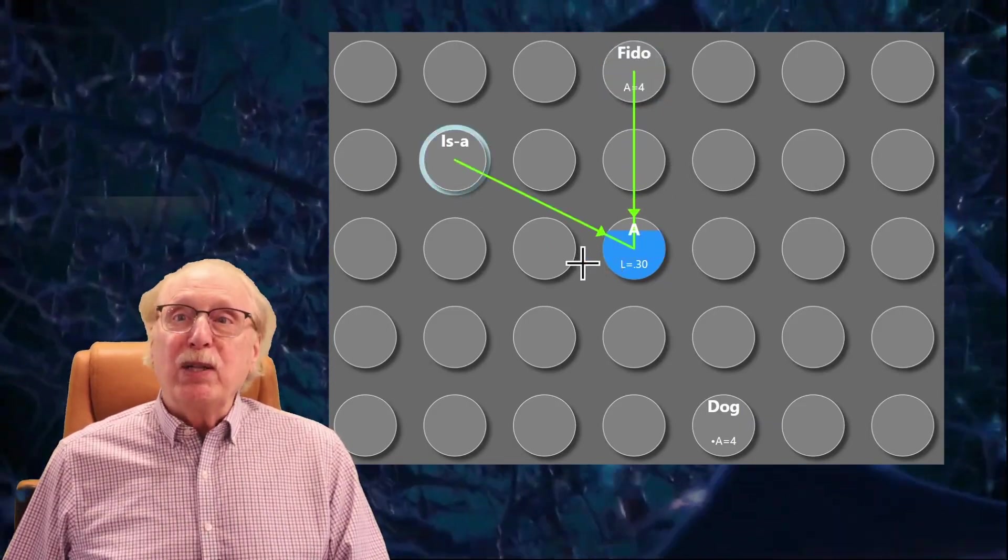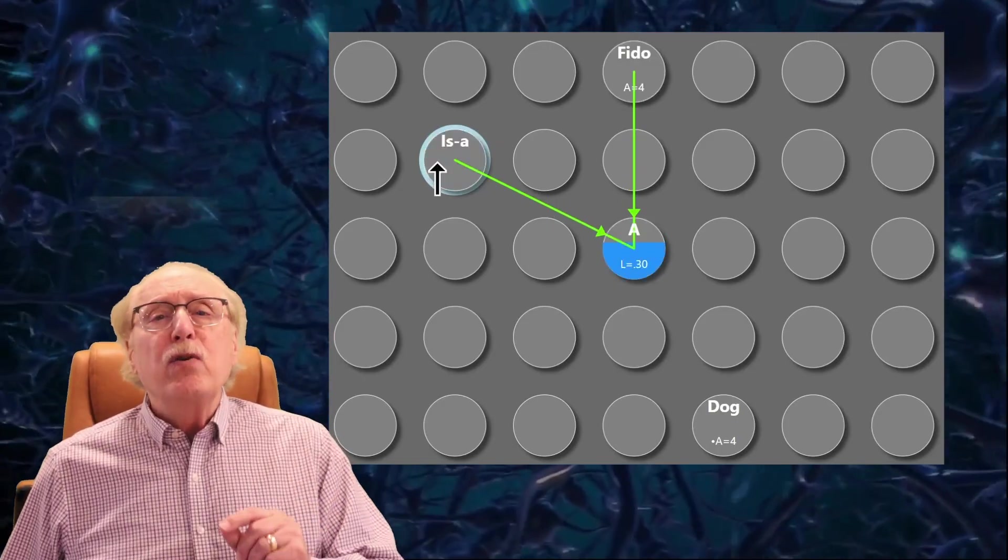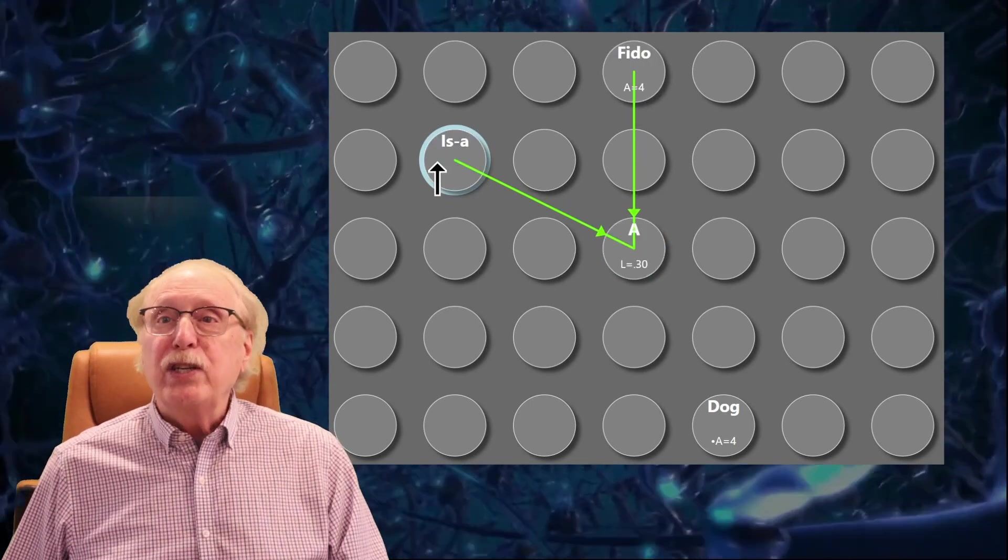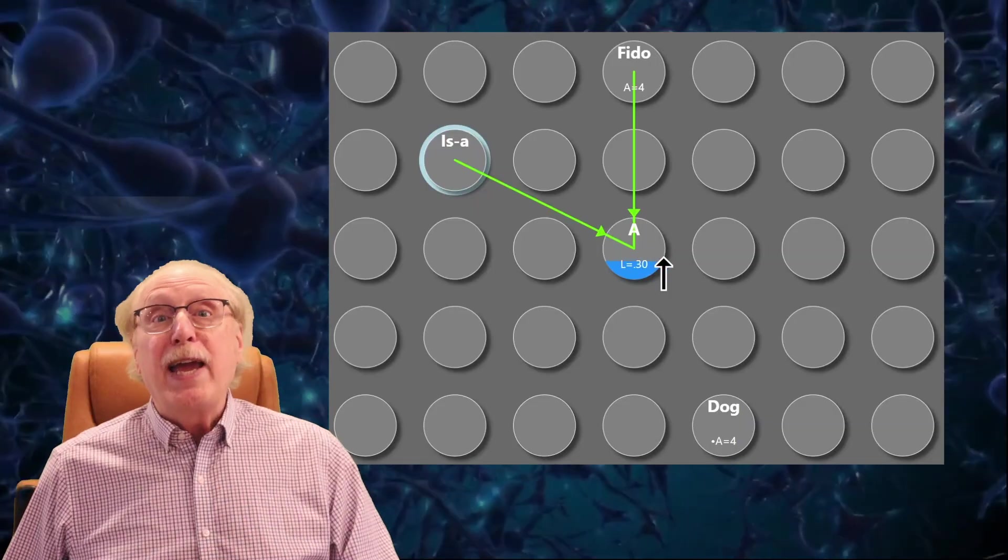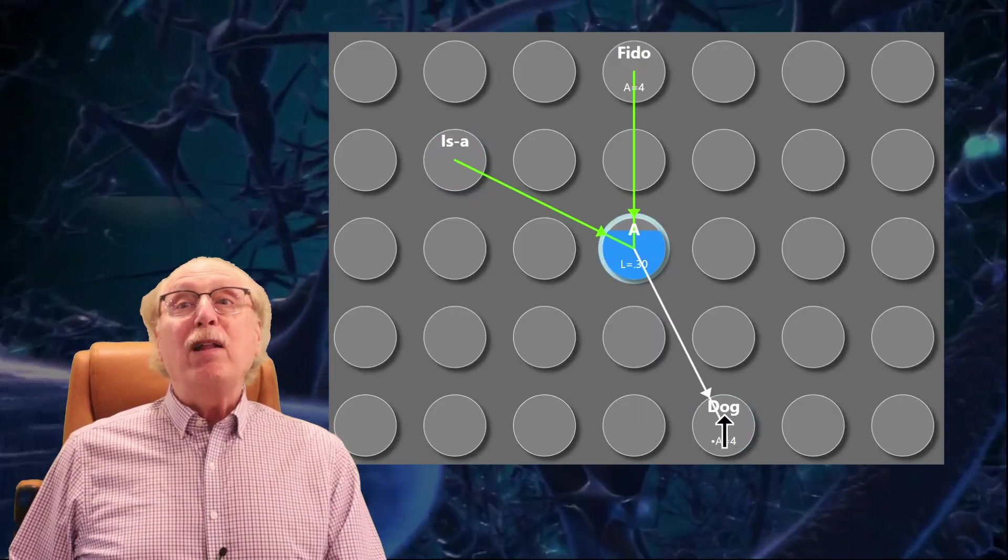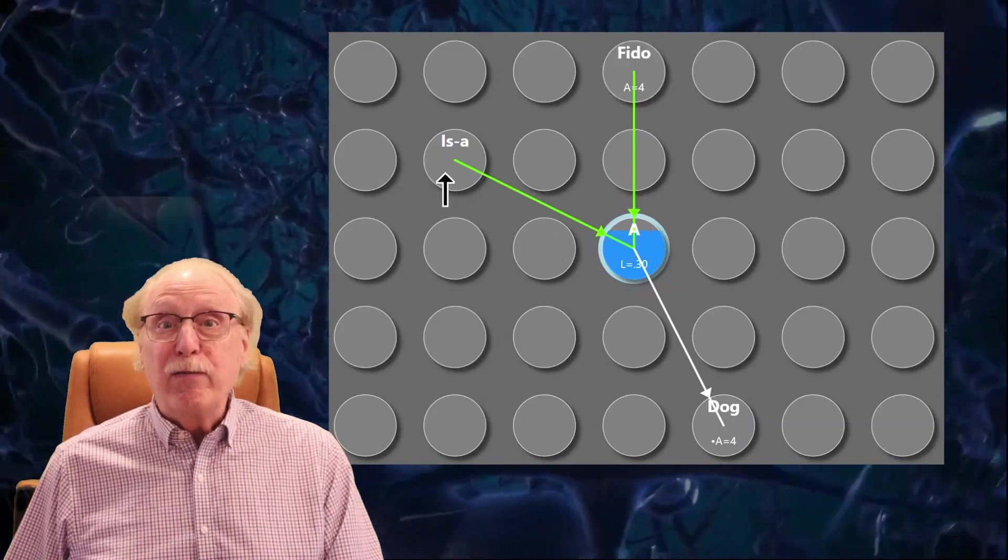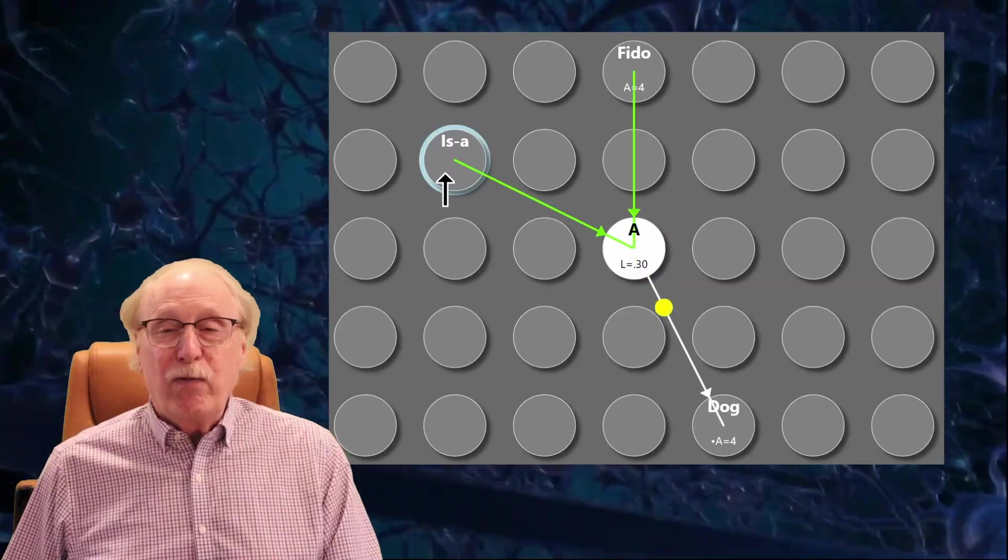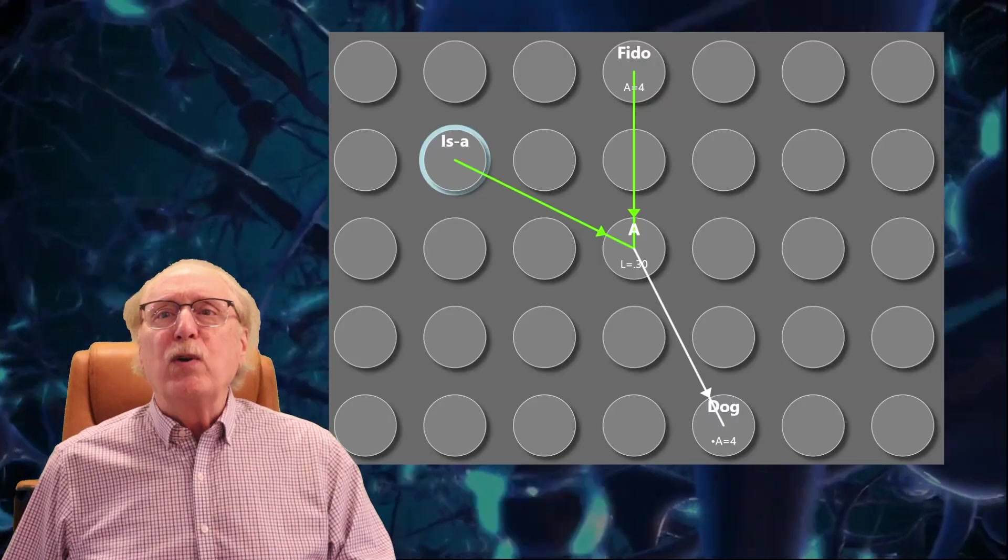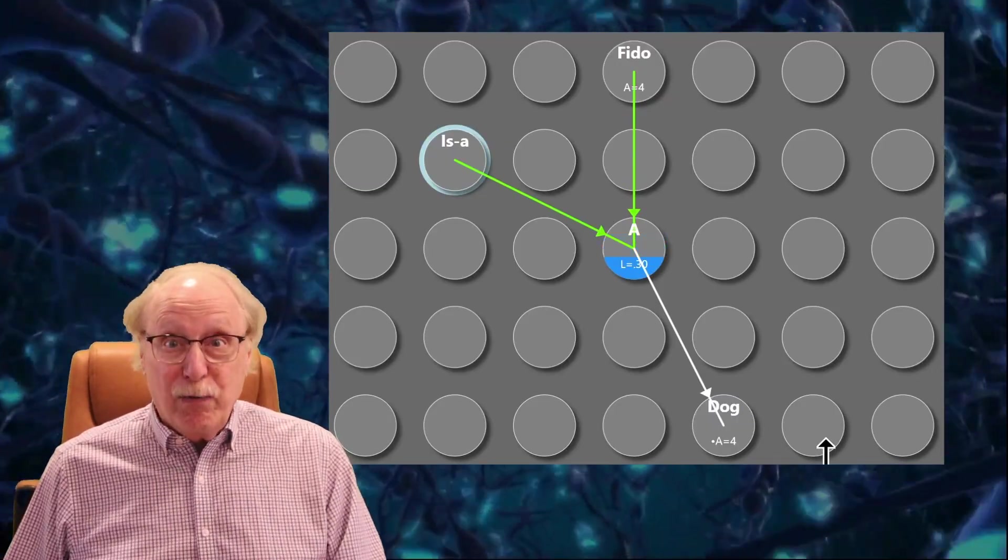Now I'll add a similar synapse from the Iza neuron to neuron A, and you can see that if the Iza neuron fires while the Fido neuron continues firing, neuron A will fire shortly thereafter. Lastly, I'll connect A to the dog neuron with a synapse weight of 1, so that dog will fire directly after A. Now whenever Fido is firing and Iza fires, dog will fire.